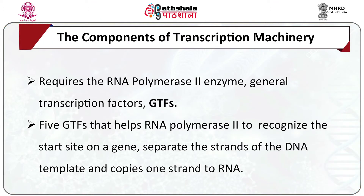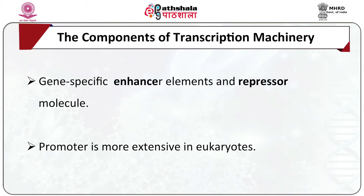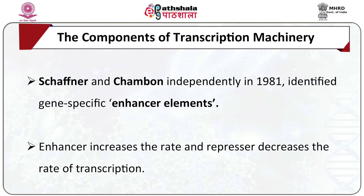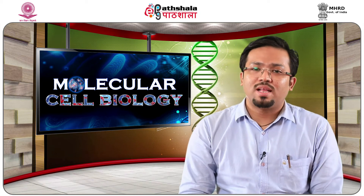The components of the transcription machinery. The transcription process proceeds in an error-free manner and requires the RNA polymerase II enzyme and general transcription factors referred to as GTFs. Assisted by five GTFs, RNA polymerase II in eukaryotes recognizes the start site on a gene, separates the strands of the DNA template, copies one strand into RNA using ribonucleoside triphosphates as building blocks, and finally reunites the two DNA strands while translocating along the DNA. The promoter concept was originally derived from studies of transcription in prokaryotes, but in eukaryotes they are found to be much more extensive. Studies by Schaffner and Chambon independently in 1981 led to the identification of gene-specific enhancer elements — DNA sequences that bind gene activator proteins which control transcription of specific genes.